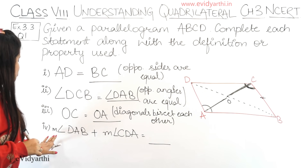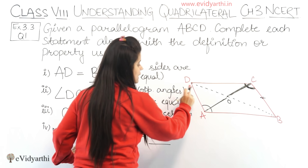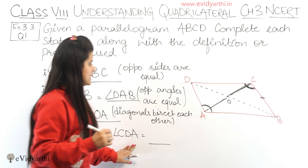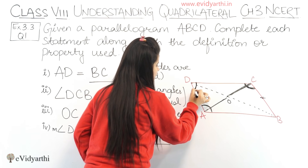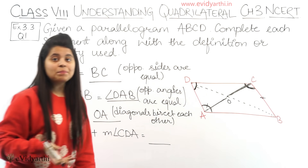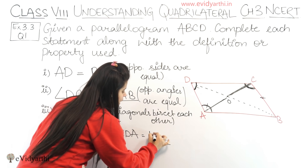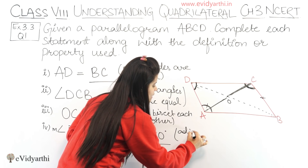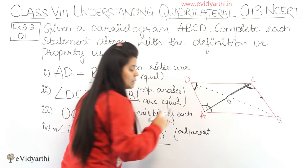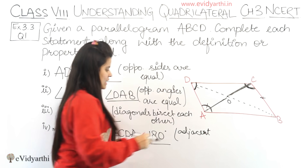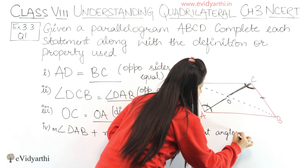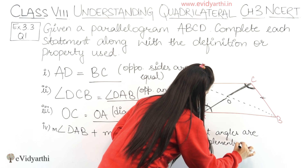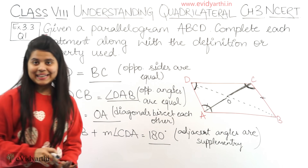The last part: the measure of angle DAB plus the measure of angle CDA. The sum of these two adjacent angles will be 180 degrees. This is because in a parallelogram, adjacent angles are supplementary, meaning their sum is 180 degrees.